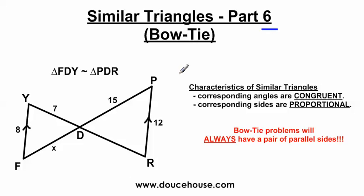This says bow tie here because these two similar triangles look like they make a bow tie. I've got triangle FDY. FDY is similar to triangle PDR. They're sharing a vertex here, so they're basically touching each other. And it looks like we have a bow tie.